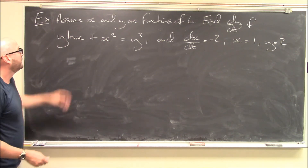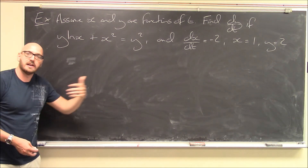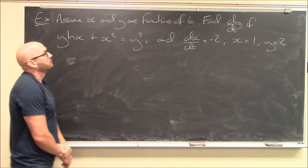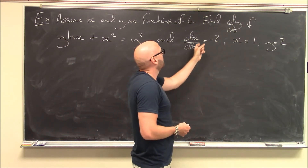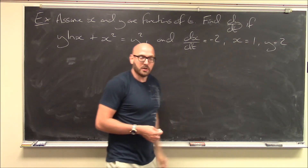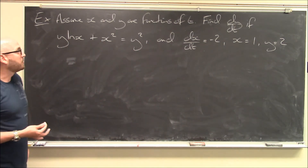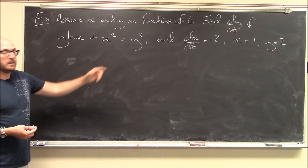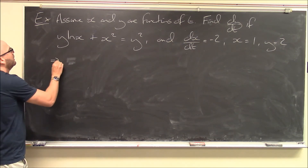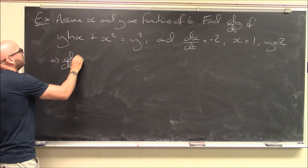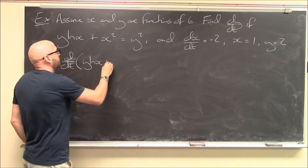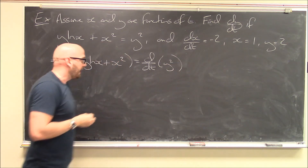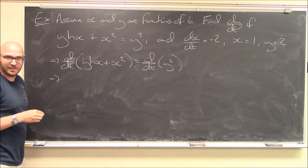We'll do one more, very similar to the last one. Here's an equation relating x and y, where both are functions of t. The question is: find dy/dt given that dx/dt is −2, x is 1, and y is 2. If you understood the last problem, you should be able to pause the video and work through this — it's completely analogous with a different equation. But we'll go through it now. First, differentiate both sides with respect to t.